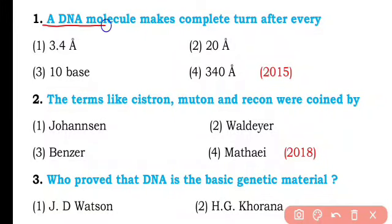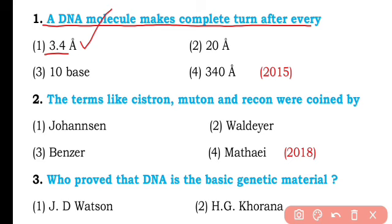Question number one. A DNA molecule may complete one turn after every 3.4 angstroms. So the correct answer is option one.